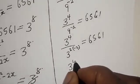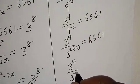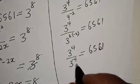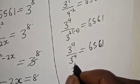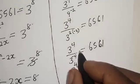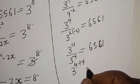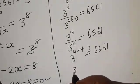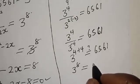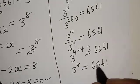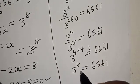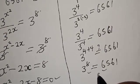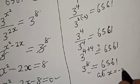This gives 3 raised to power 4 over 3 raised to power minus 4. Moving the denominator up changes the sign: 3 raised to power 4 plus 4, which is 3 raised to power 8. Since 3 raised to power 8 equals 6561, the left-hand side equals the right-hand side. This confirms the equation is satisfied at s equals minus 2.